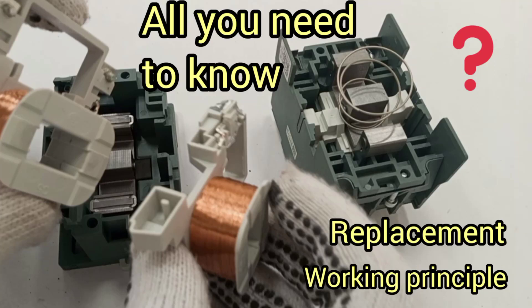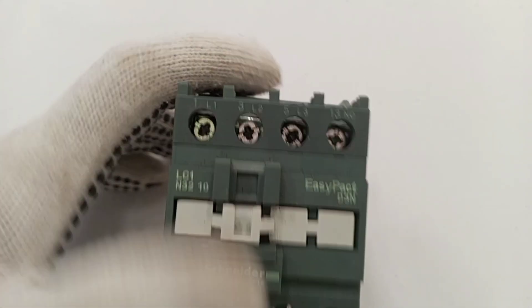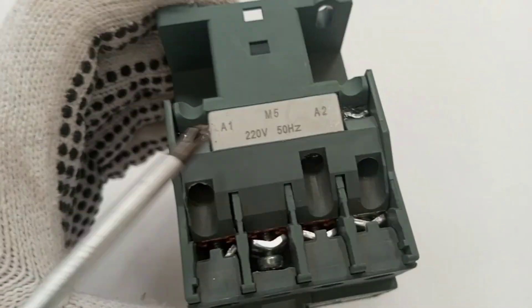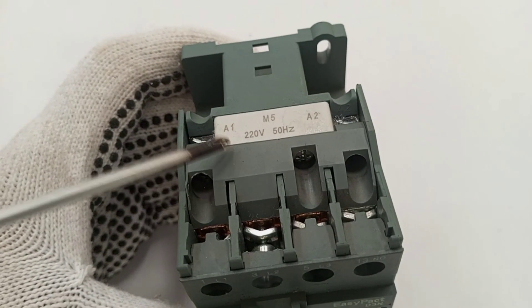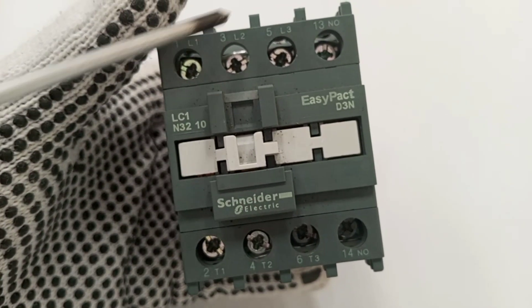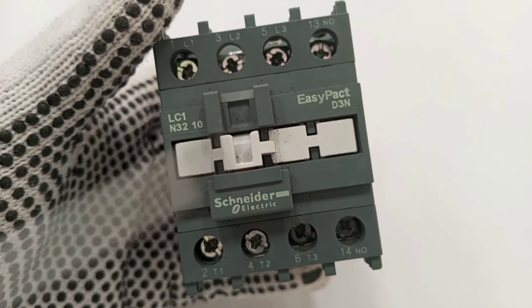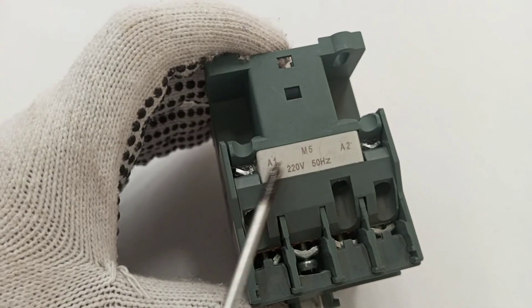My dear friend, welcome to my channel. In this video, I'm going to practically show how to replace a contactor coil. This is a contactor and it has a coil. It is this coil that gets magnetized to close the contacts of the contactor to the load. When the coil goes bad, you can easily replace it.